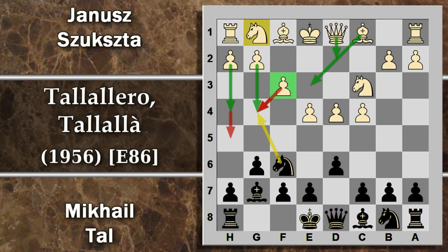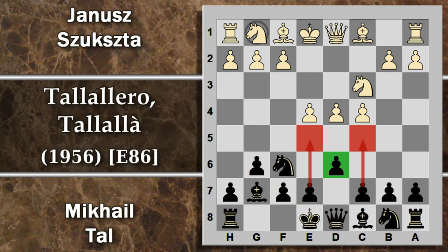F3 permette un principio di attacco sull'ala di re. Questi pedoni, ora sostenuti da F3, potranno avanzare: il pedone H e il pedone G. Si blocca l'avanzata del cavallo in G4 e tipicamente si potrà creare una batteria di donna-alfiere per sfianchettare l'alfiere avversario. Il contro è che il cavallo in G1 non ha a disposizione la normale casa di sviluppo in F3. La mossa più comune è il cavallo F3.